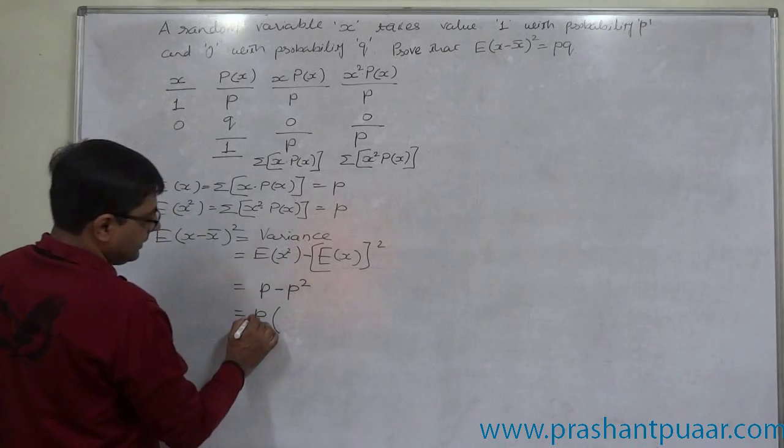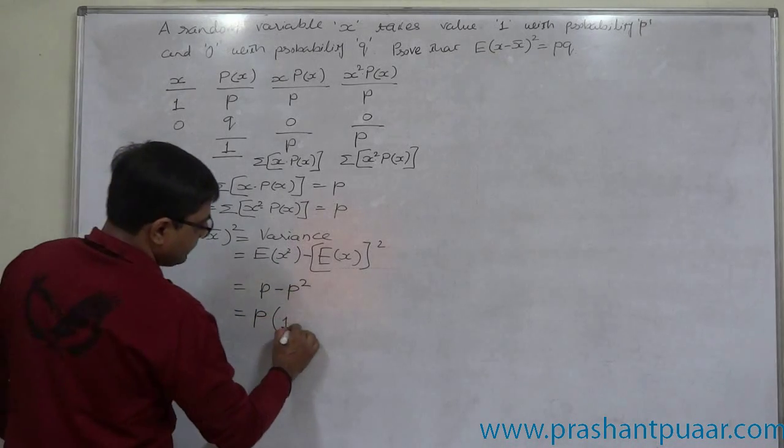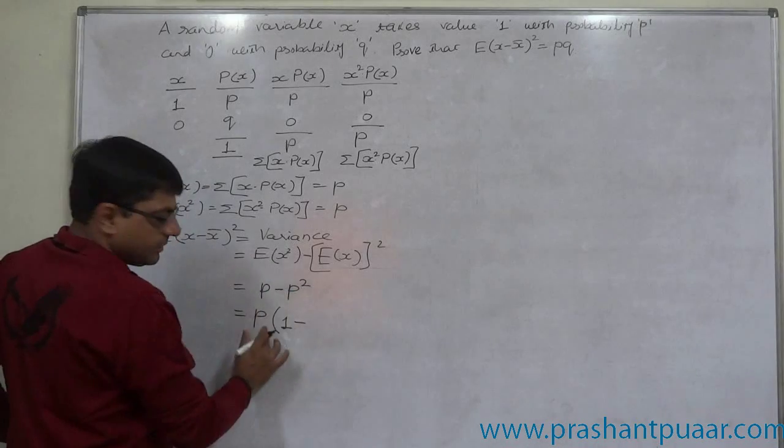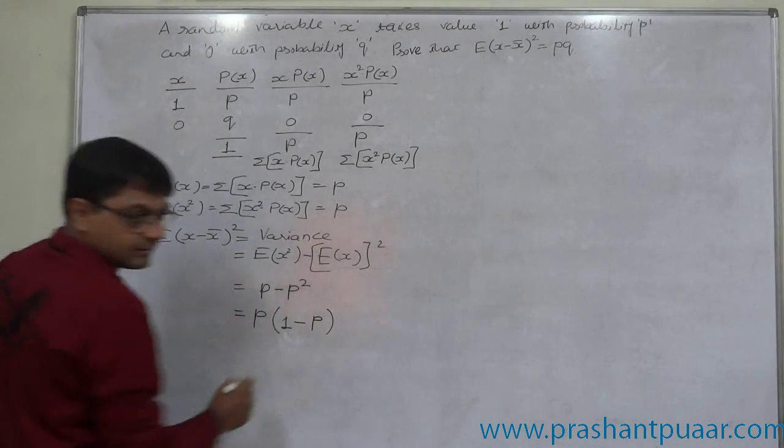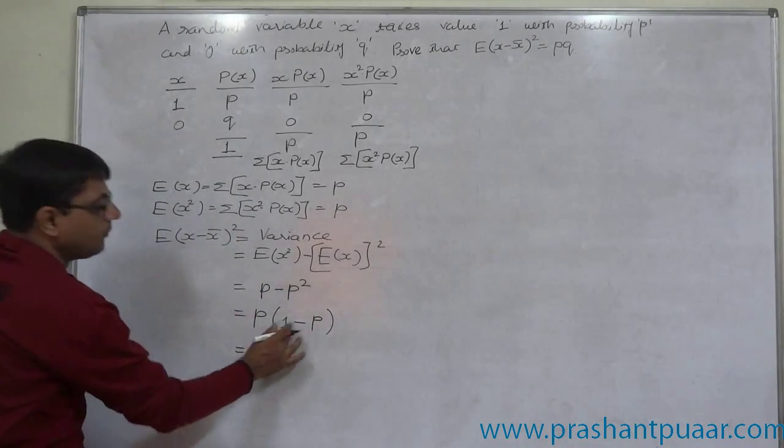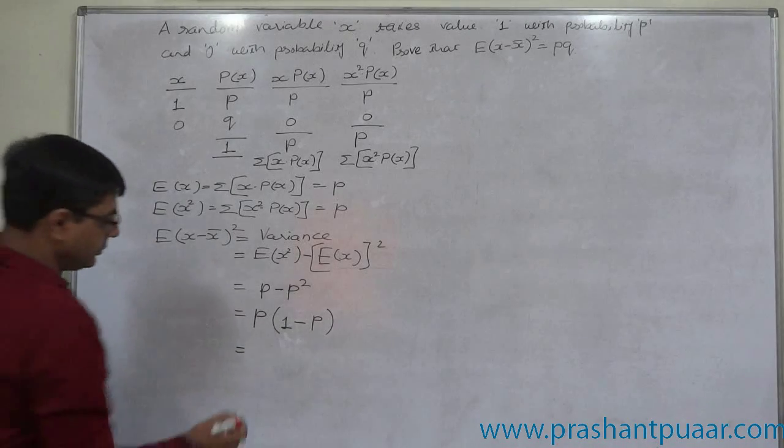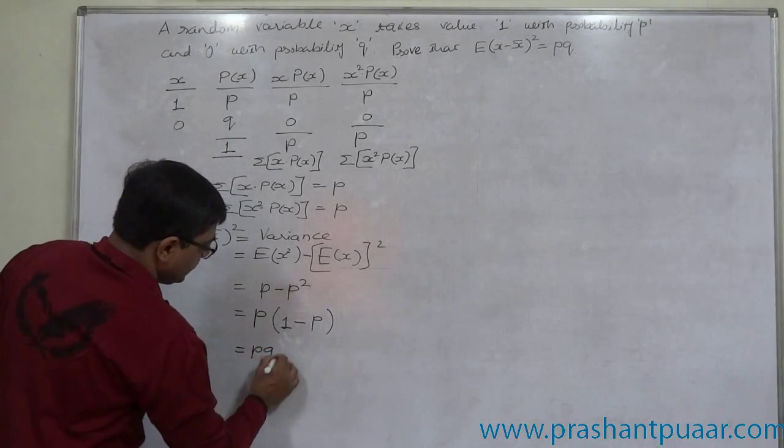It comes to P. P divided by P is 1 minus P square divided by P is P. And we know that 1 minus P is nothing but Q. So variance is P into Q.